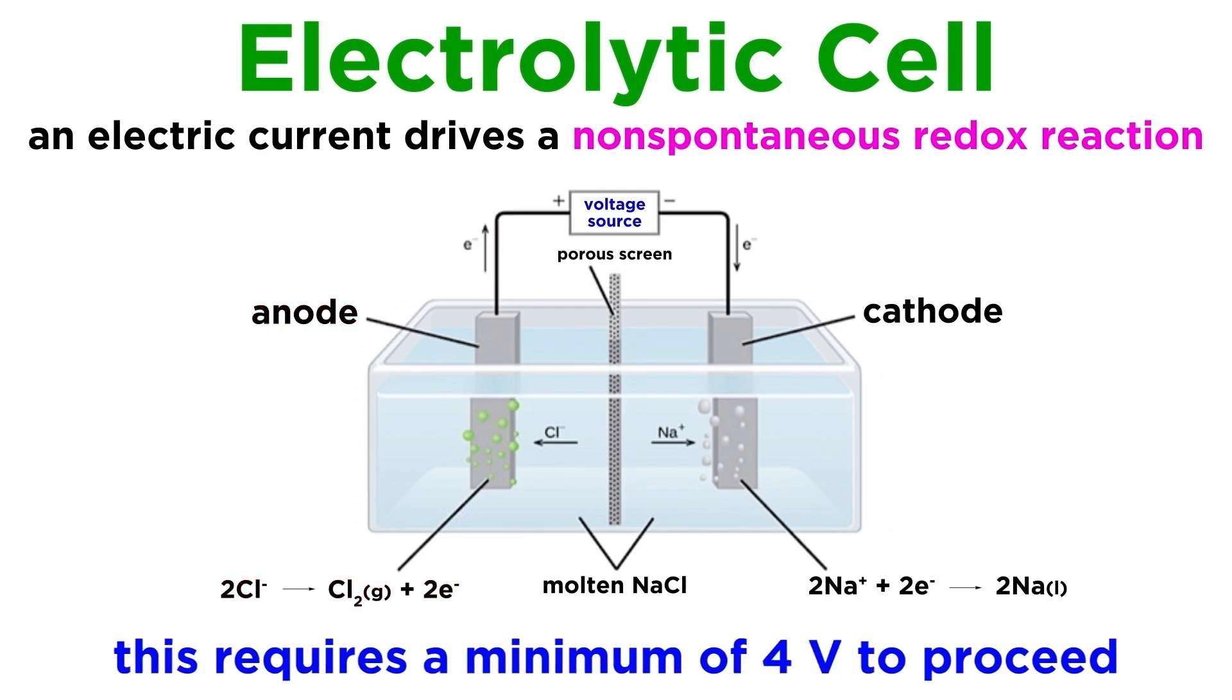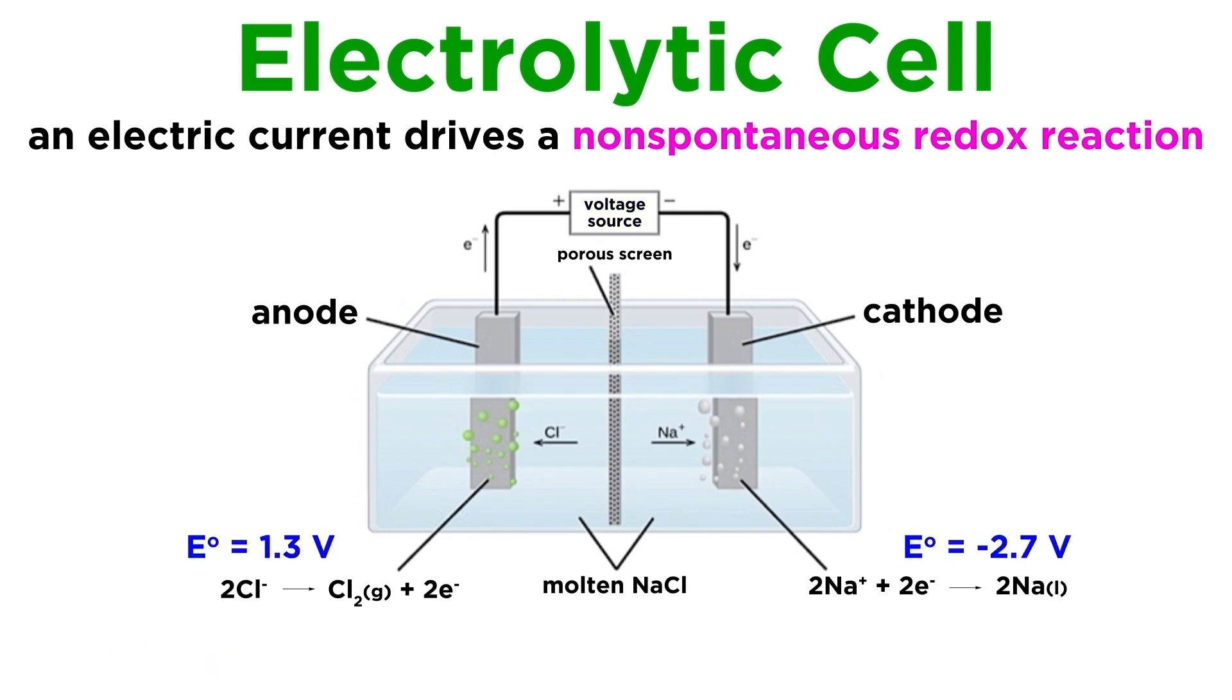Of course, this is a non-spontaneous process, so it will require a minimum of 4 volts in the way of a supplied electric current to occur. We can see why this is the case if we look at the half-reactions associated with this cell. The E cell for the overall reaction is negative 4 volts, and this is why this is the minimum voltage that must be applied in order to drive the reaction.